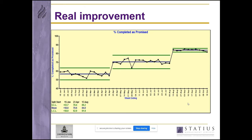You might think: just move out the end date and get better completion stats by spreading the work over a longer period. But this particular work was being done for a national retail chain with an assertive view of supplier management. If they say their store is going to open on the first of the month, you can be pretty sure it will. So moving the end date was not an option. How else might we apply this thinking?